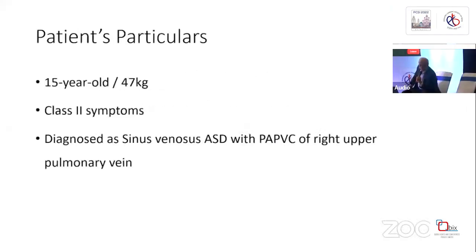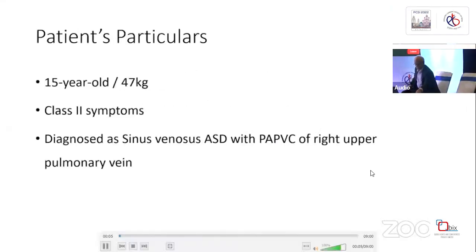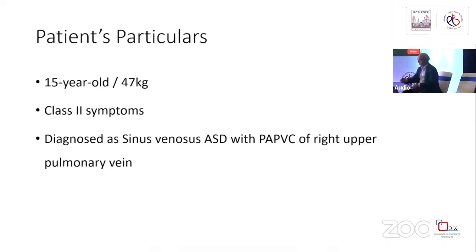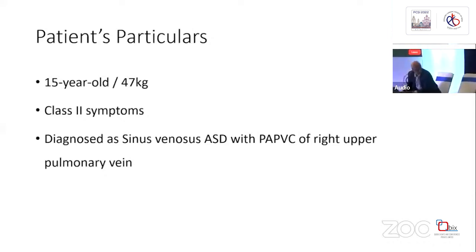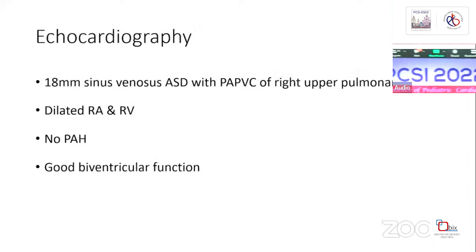Good morning. This is a 15-year-old boy weighing 47 kg, diagnosed with sinus venosus ASD with partial anomalous venous drainage of the right upper pulmonary vein. He is having Class 2 symptoms.